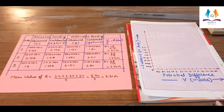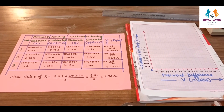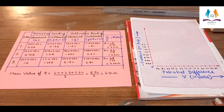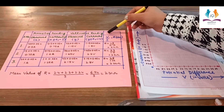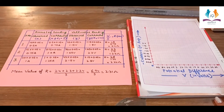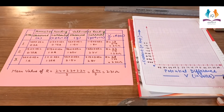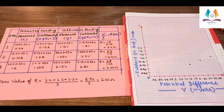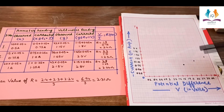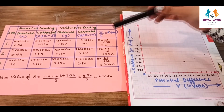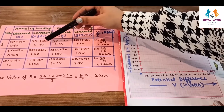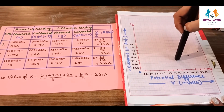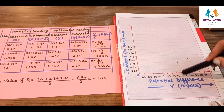To prove that V is directly proportional to I, we draw a graph between voltage and current, with potential difference along the x-axis and current along the y-axis. I have already marked the three points — the first has current 0.75 ampere and voltage 1.8 volt.